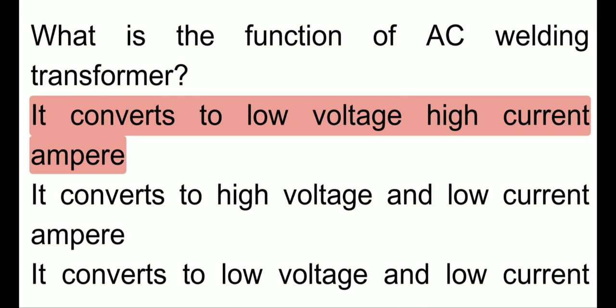What is the function of an AC welding transformer? The main function of the AC welding transformer is: it converts to low voltage, high current ampere.